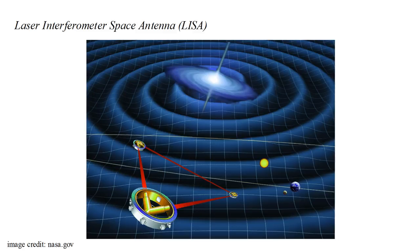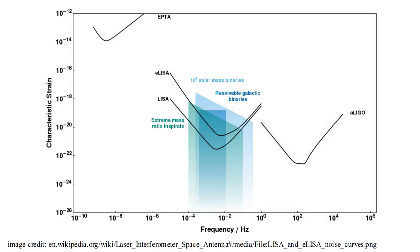To have test masses truly in free fall will require a space-based interferometer, and such systems are indeed planned for the future. These systems will be able to detect gravitational waves with much longer periods, hence much lower frequencies, than LIGO. This will allow us to observe new classes of phenomena.